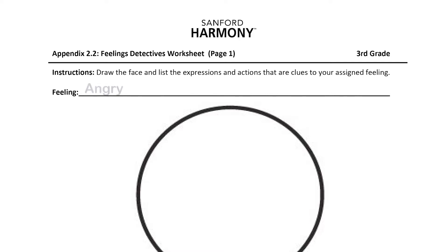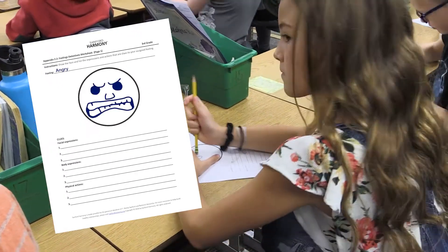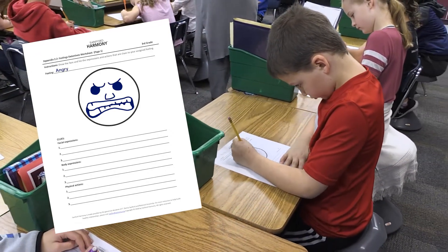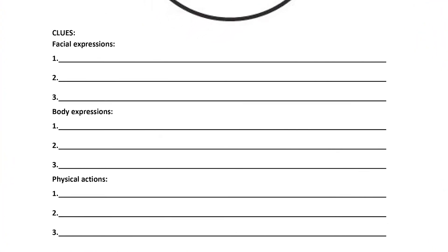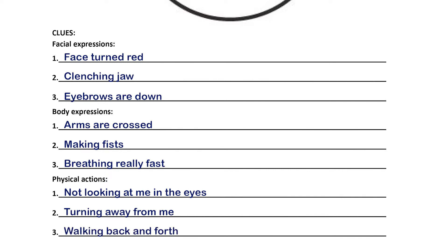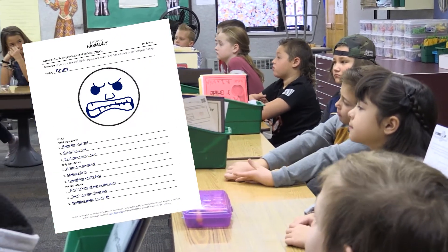We are going to work through this worksheet. On the front side, you have a circle similar to the emotions that you see around the room. I have written an emotion at the top for you and I will pass them out — you will just get one of the six emotions we're talking about. Once you get your paper, I want you to do your best to draw what that face looks like. What does somebody look like when they're happy? What does somebody look like when they're sad? And then down here, we've got a list of clues: facial clues — what does their face look like? What is their body doing? And then what are their physical reactions? Are they hiding if they're sad? Are they laughing if they're happy? You're going to fill this out on your own, and then we have another activity for the back.